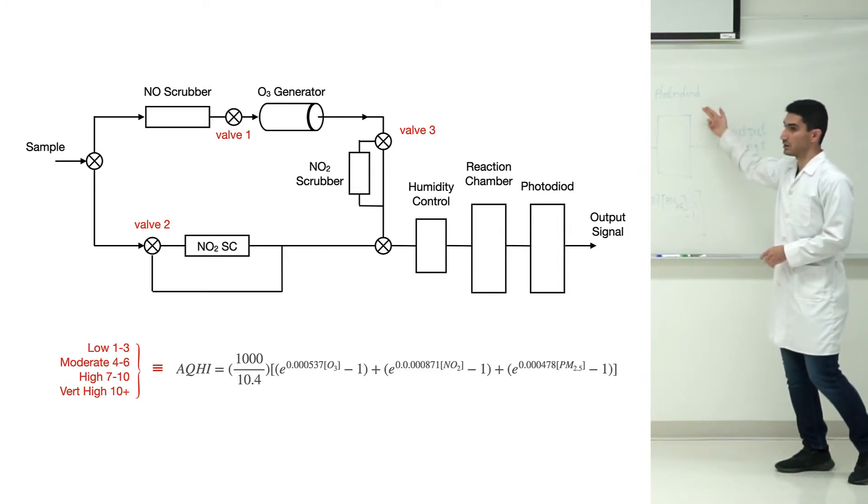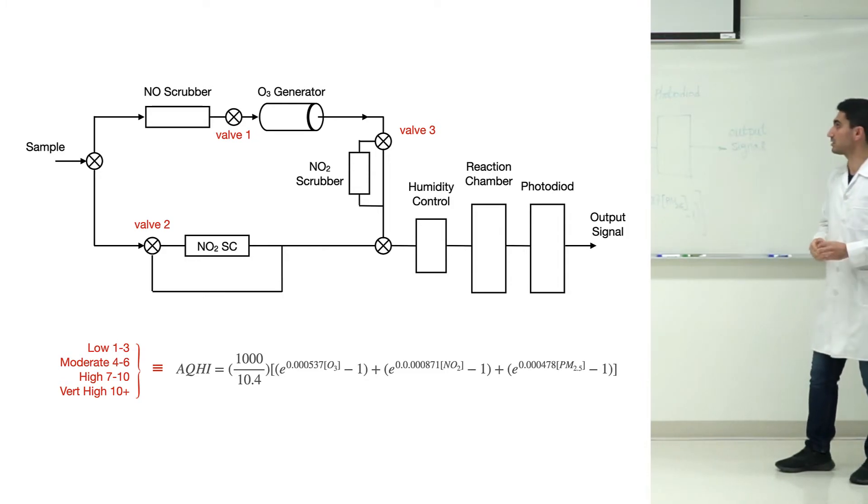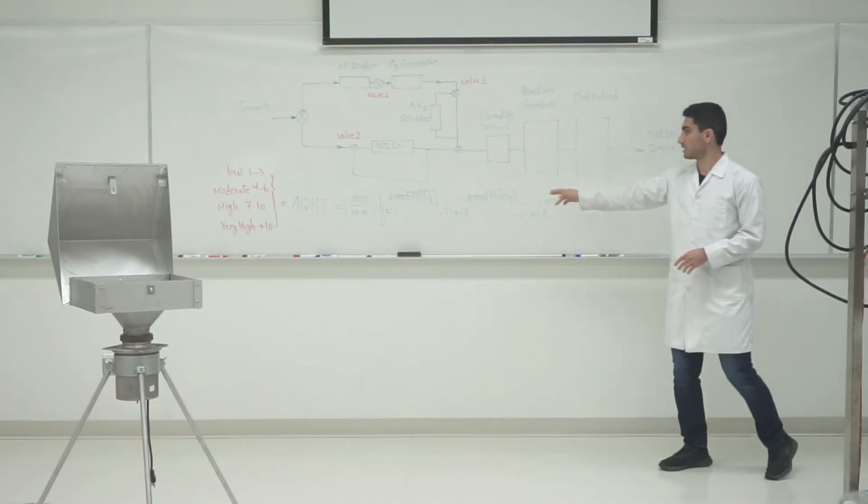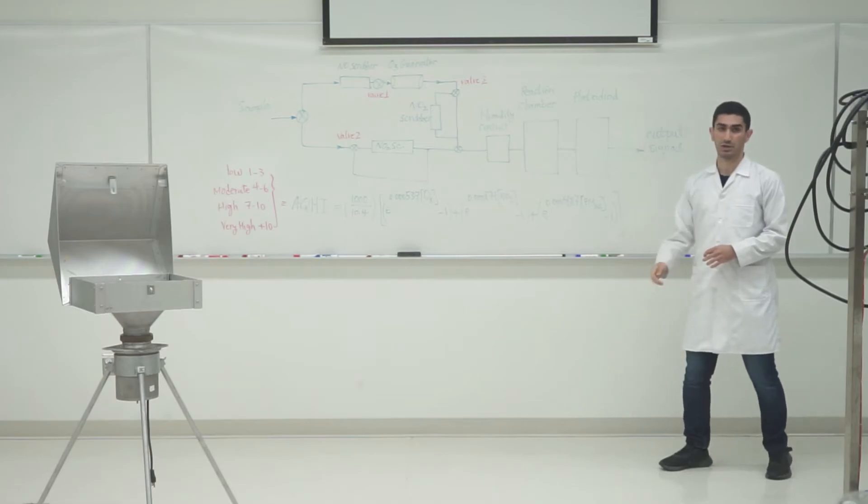Then we have a photodiode to measure the concentration of each compound separately or together. We have an output signal to measure each of them in our sample. After that, we have all the concentrations and with this formula we can calculate the AQHI.